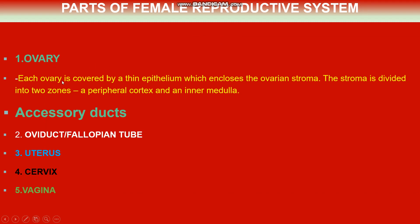Each ovary is covered by a thin epithelium which encloses the ovarian stroma. The stroma is divided into two zones: an outer peripheral cortex and an inner medulla.